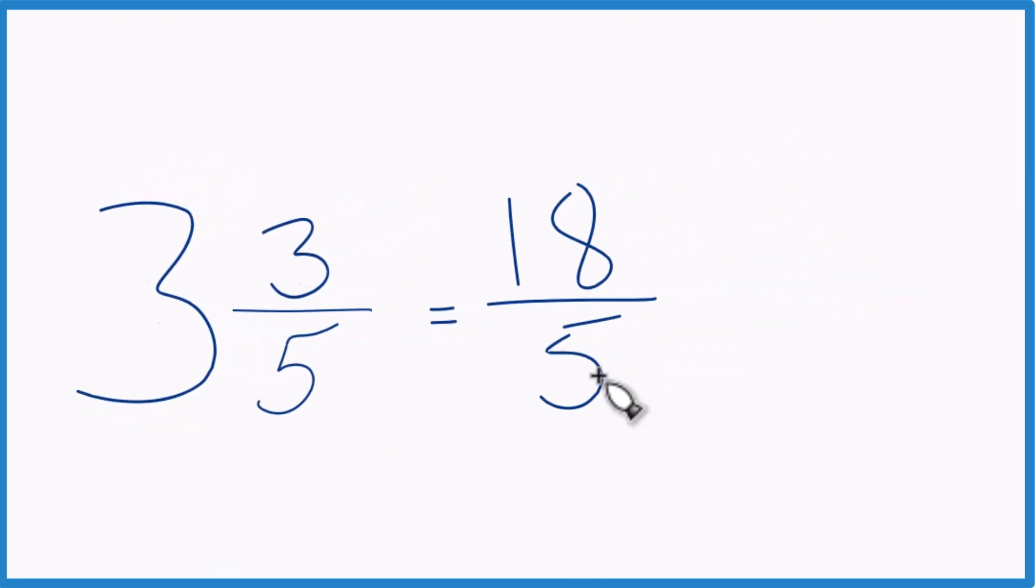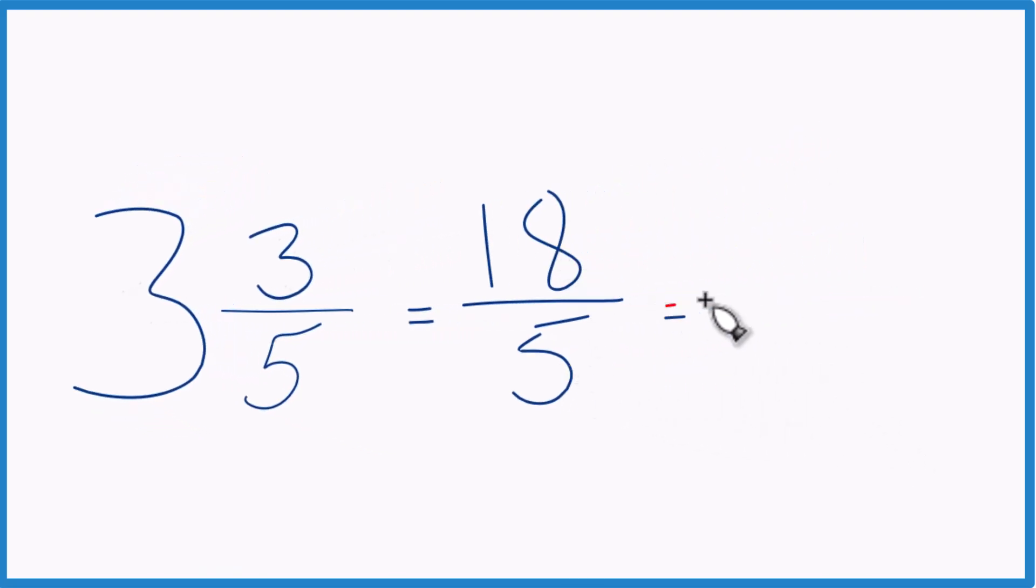And we can even check our work because 5 goes into 18 3 times with 3 left over. Bring the 5 across, 3 and 3 fifths, and that is what we started with.